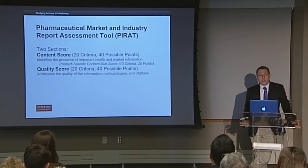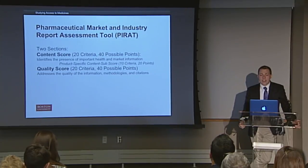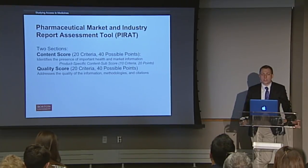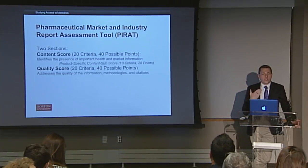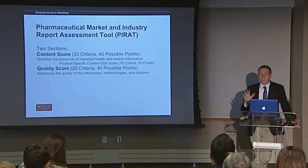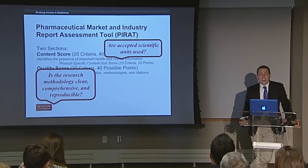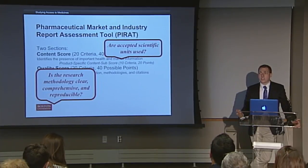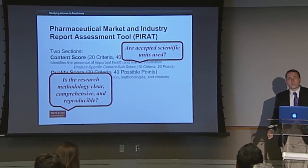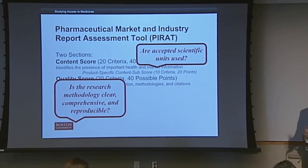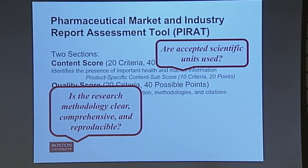Then there's also the quality score. This shows whether the quality of the information, the methodologies used, and the citations are clear and of high scientific quality. This is also 20 criteria out of a possible 40 points. All of these were on a zero-to-two scale: zero meaning not there, one meaning somewhat, two meaning totally there, with some exceptions. For quality, are accepted scientific units used — does it use milliliters, or does it say 'pieces' or some other random unit? Is the research methodology clear, comprehensive, and reproducible? While we don't necessarily have the resources of a market research company to reproduce what they did, do we know what they did? Can we reproduce their analyses? Can we validate what they did?